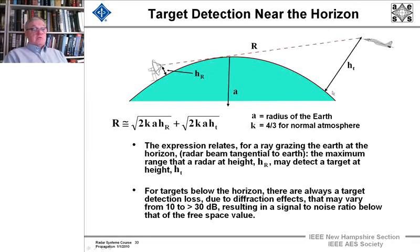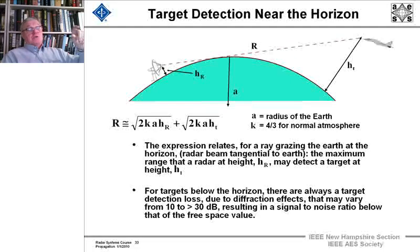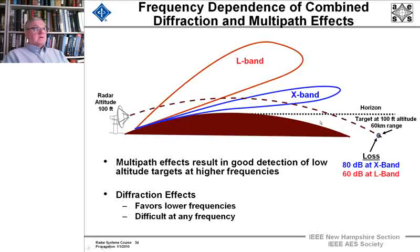For targets below the horizon, there's always target detection loss due to diffraction effects. And that loss can be from 10 to 30 dB. You can see that those losses in the propagation factor were quite large. That was for one-way propagation. And you notice it goes as F to the fourth power. So you need significantly increased signal-to-noise ratio in the radar to see below the horizon.